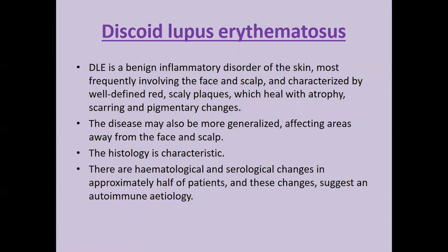Discoid Lupus Erythematosus, also known as DLE, is a benign inflammatory disorder of the skin, most frequently involving the face and scalp, and characterized by well-defined red scaly plaques which heal with atrophy, scarring, and pigmentary changes. The disease may be more generalized, affecting areas away from the face and scalp, which is the disseminated form. Histology is characteristic. There are hematological and serological changes in about half of patients, suggesting an autoimmune etiology, but the presence of these autoantibodies does not imply the patient is going to convert into SLE.